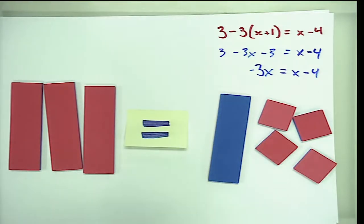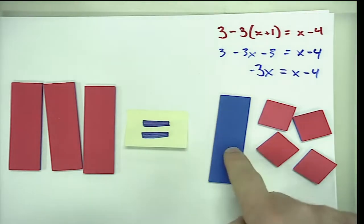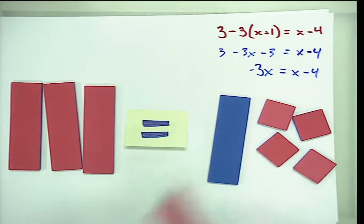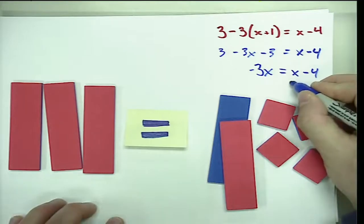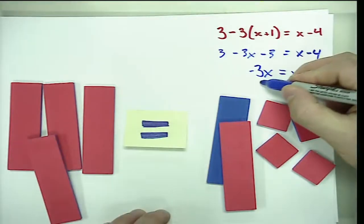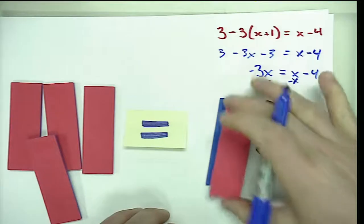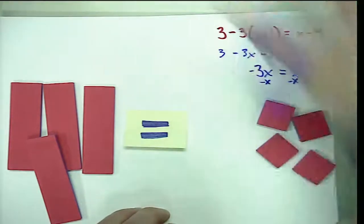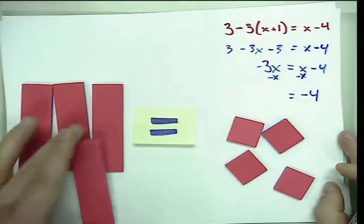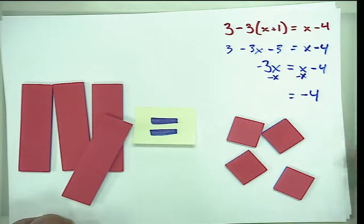The goal is to get X values to one side and constants to the other to isolate the variable. We want to remove the X from the right-hand side, so we add a negative X to that side — and if we do that we must also add a negative X to the left side. On the right, the positive X and negative X create a zero pair and cancel out, leaving negative four.